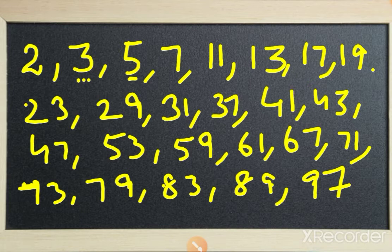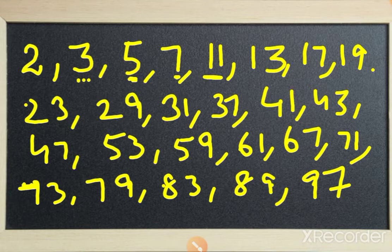There are 25 prime numbers between one to hundred. Prime numbers are those numbers which have exactly two factors — one and the number itself. For example, five either comes in the table of one or its own table. Seven also comes either in the table of one or its own table. Eleven also comes either in one's table or its own table — no other factor exists for them besides one and the number itself.